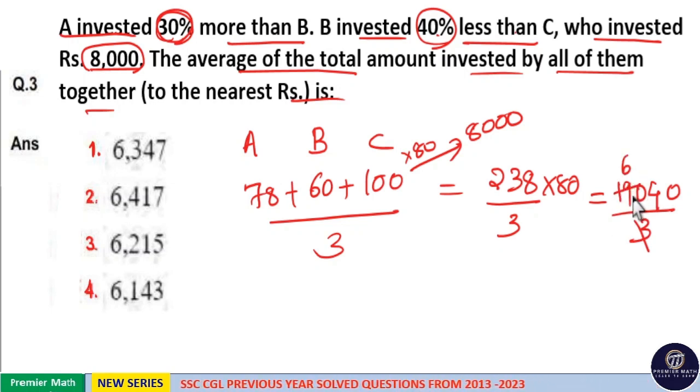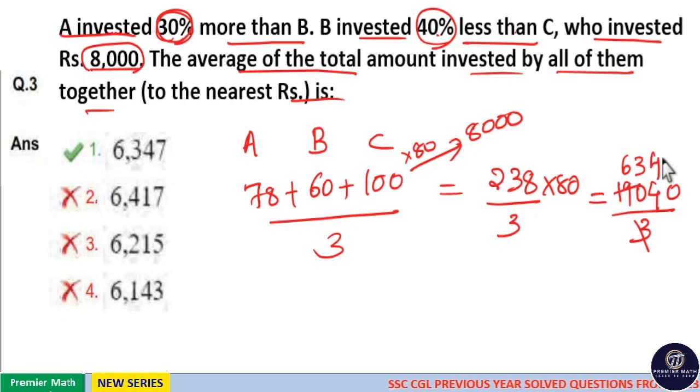Now 3 goes 6 times in 19, remaining 1. 3 goes 3 times in 10. Here first two digits is 63, so option 1 is your answer. That is 6347 is the average amount.